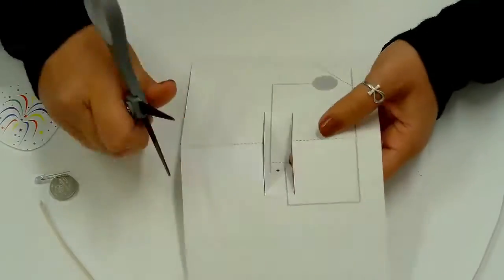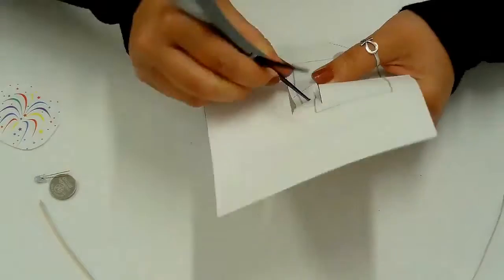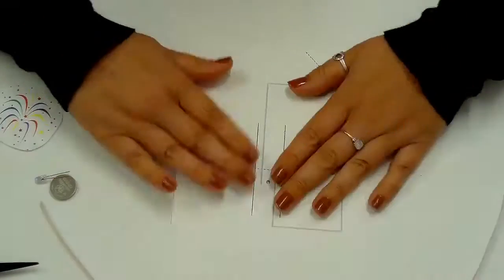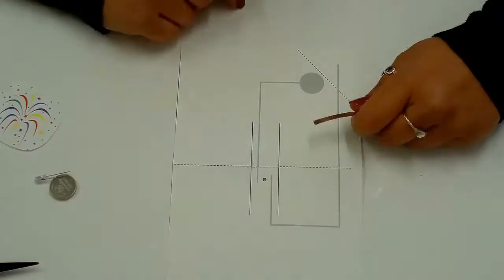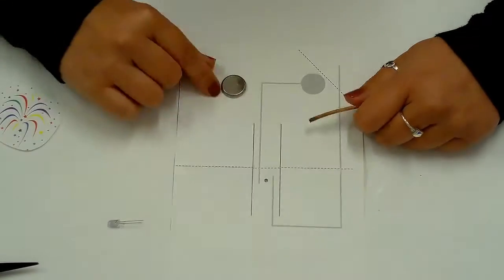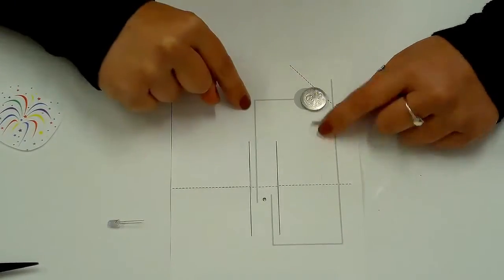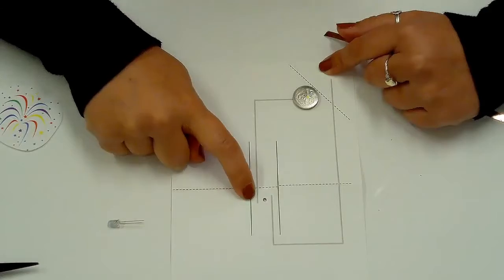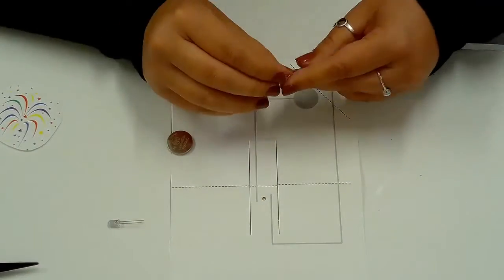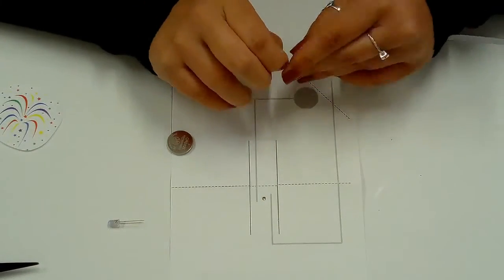Carefully poke through the black dot to make a hole for the arms of the LED light. The battery will go negative side down on the gray circle. This makes that line leading from the battery the negative side and the other line the positive side. Remember this when adding the LED light.